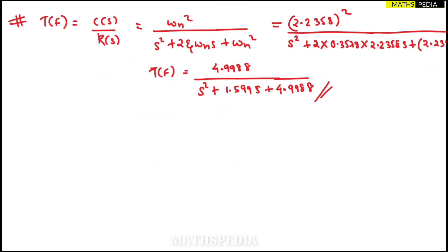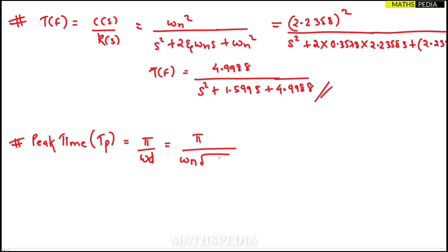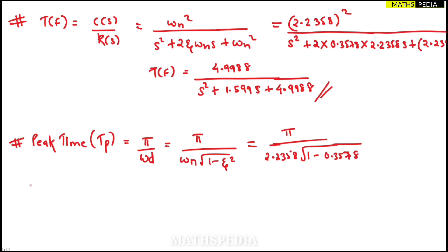Next, we find the peak time tp. The formula is tp = π / ωd, where ωd = ωn·√(1−ζ²). Substituting ωn = 2.2358 and ζ = 0.3578, we get ωd ≈ 2.0877 rad/s. Therefore tp = π / 2.0877 ≈ 1.5047 seconds.